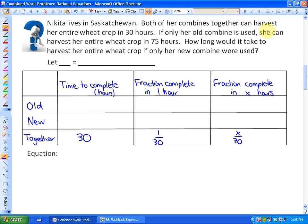If her old combine is used, she can harvest her entire wheat crop in 75 hours. In one hour, that's 1/75, or in x hours, x/75. The question is, how long would it take if only her new combine were used? We let x equal number of hours for the new combine. It takes x hours, or in one hour, 1/x of the job, or in x hours, x/x or 1.